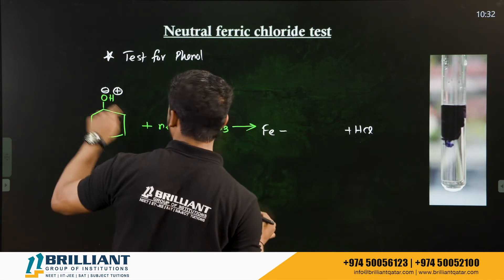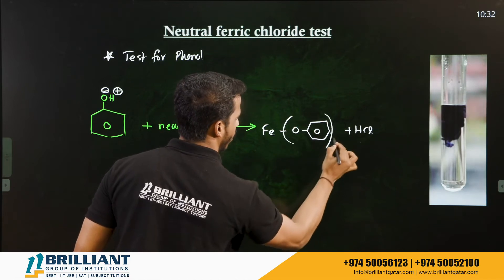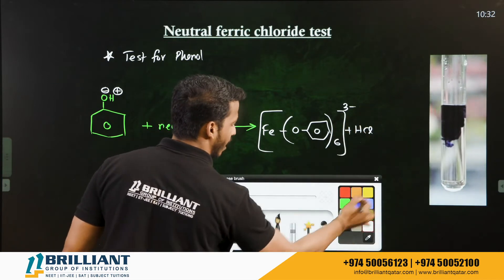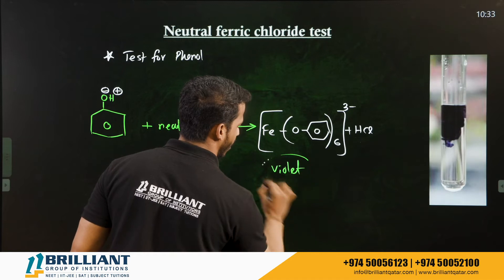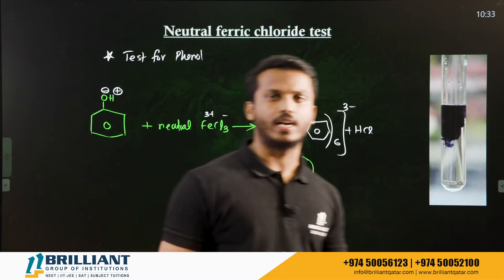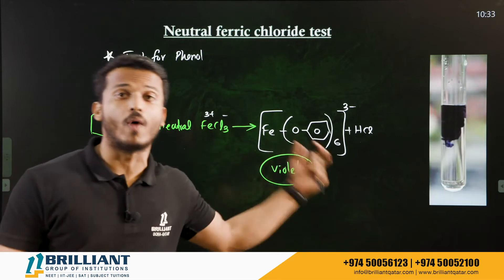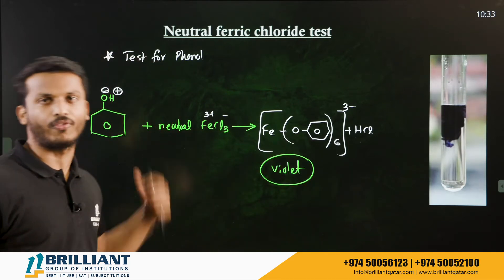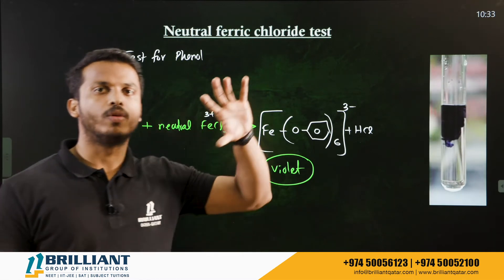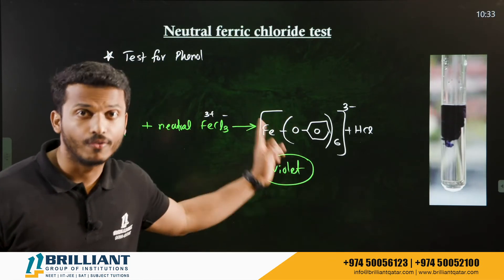Iron combines with the phenoxide ion (–OH attached to the benzene ring). Six phenoxide ions coordinate around the iron with an overall charge of 3 minus on the complex. This complex has a violet color. So the neutral ferric chloride test gives a violet-colored complex, and this test is given only by phenol.